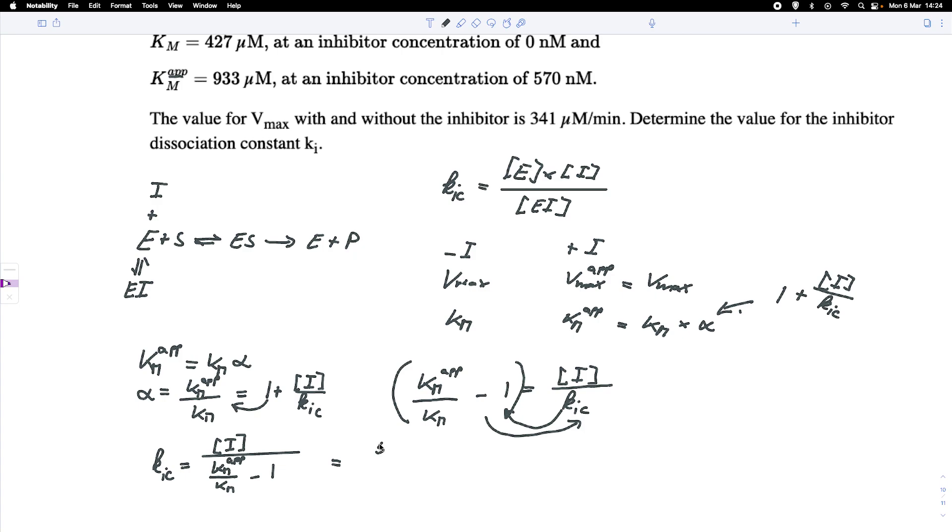So we've got 570 nanomolar for our competitive inhibitor. That's the concentration that we use here, divided by, what have we got? We've got a KM up divided by the KM. That would be 933 over 427 micromolar. We see the micromolar cancel out. That is quite handy. Minus 1.